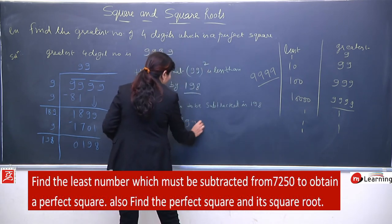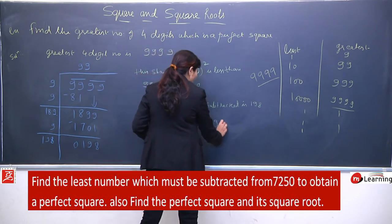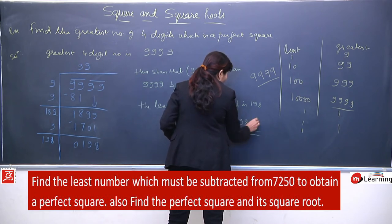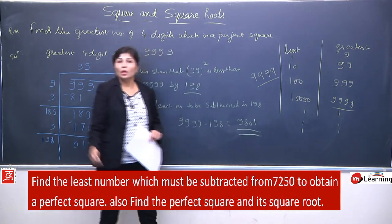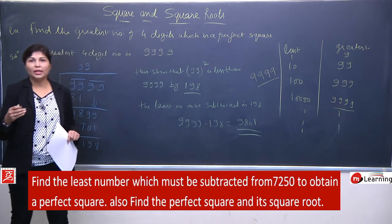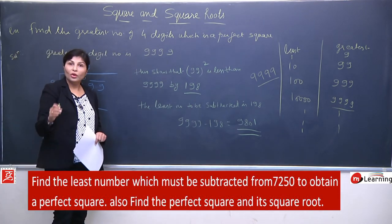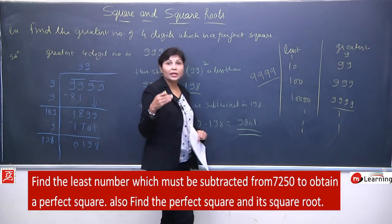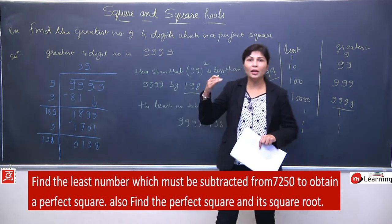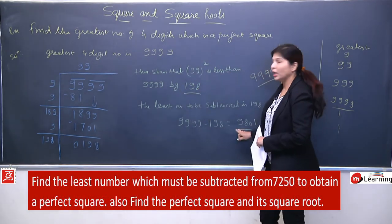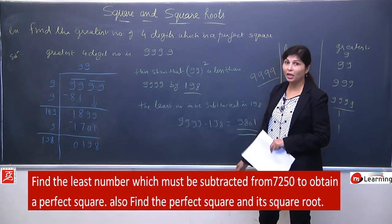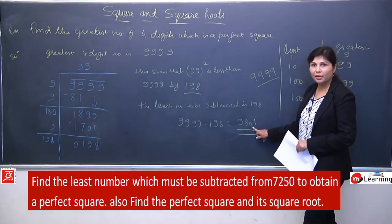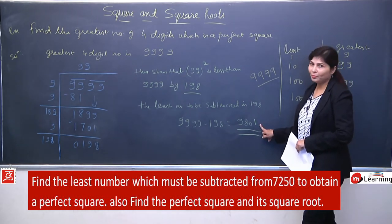9801 ka square root nikaalenge using long division method. Pairing: 98 | 01. 9 × 9 = 81, subtract karenge, 17 milega. 9 add ho jayega so it becomes 18 — yahan 9 se divide karenge. 1701 aayega, remainder is 0. So 4-digit ka greatest perfect square is 9801, aur iska square root 99 hai. 9802 se lekar 9999 tak koi bhi perfect square nahi hoga.